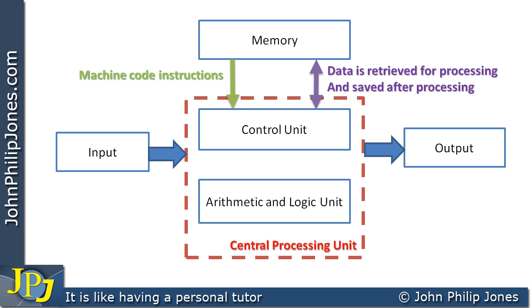Data can be retrieved for processing and saved after processing. For the current executing machine code instruction, the control unit could typically send an instruction to the arithmetic and logic unit together with some data, informing it to do something — for argument's sake, add it up. The arithmetic and logic unit will do that, pass the data back, and the control unit will redirect this data possibly to the computer's memory via the computer's bus system.